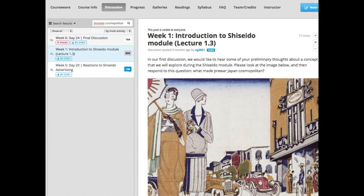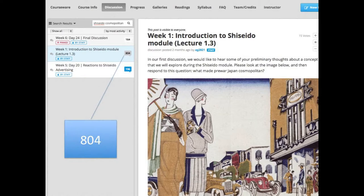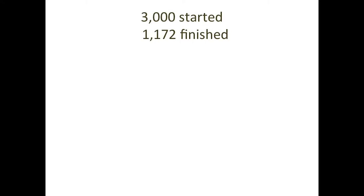One thing that really intrigued me about MOOCs is the social aspect. On the very first day, we threw up a Shiseido image from the 1930s and asked the discussion forum to discuss it — what do you see about modernity and cosmopolitanism? 804 people posted very thoughtful, often long paragraphs. That really surprised me, and this active discussion continued until the end of the course. 10,000 were registered, 3,000 showed up on the first day, and 1,172 actually completed — a pretty high completion rate.